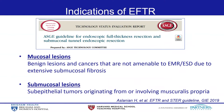I'm going to start my lecture by showing some guidelines from ASGE. This was published in 2019 by the ASGE Technology Committee, which describes two indications of EFTR. The first indication is mucosal lesions, including benign lesions and cancers not amenable to EMR or ESD due to extensive submucosal fibrosis. The other indication is submucosal lesions — epithelial lesions originating from or involving the muscularis propria — which are not amenable to EMR or ESD.